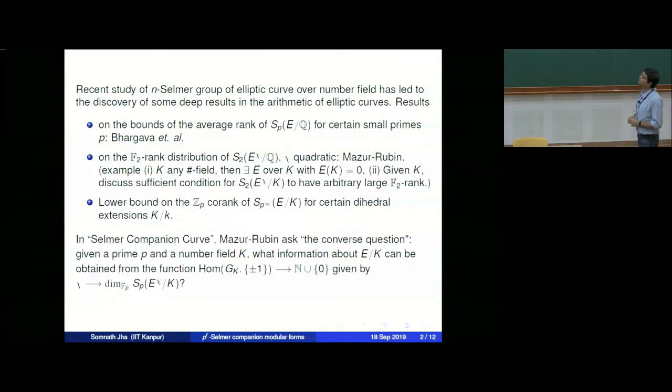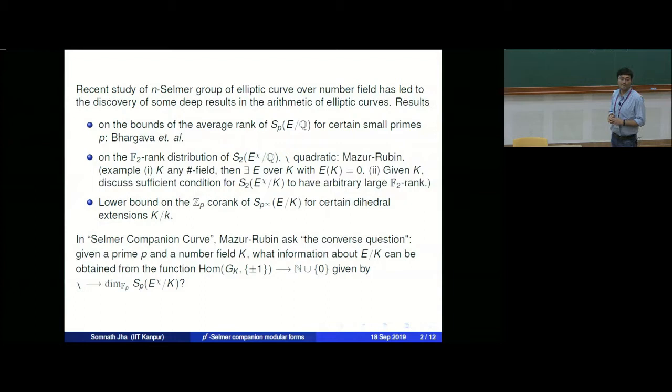More precisely, they ask: suppose you fix a prime p and a number field k, then what information about E over k can be obtained from the function that assigns to each quadratic character χ the dimension of the p-Selmer group of E^χ over k? So this is like moving in the converse direction, and this is the content of this talk.